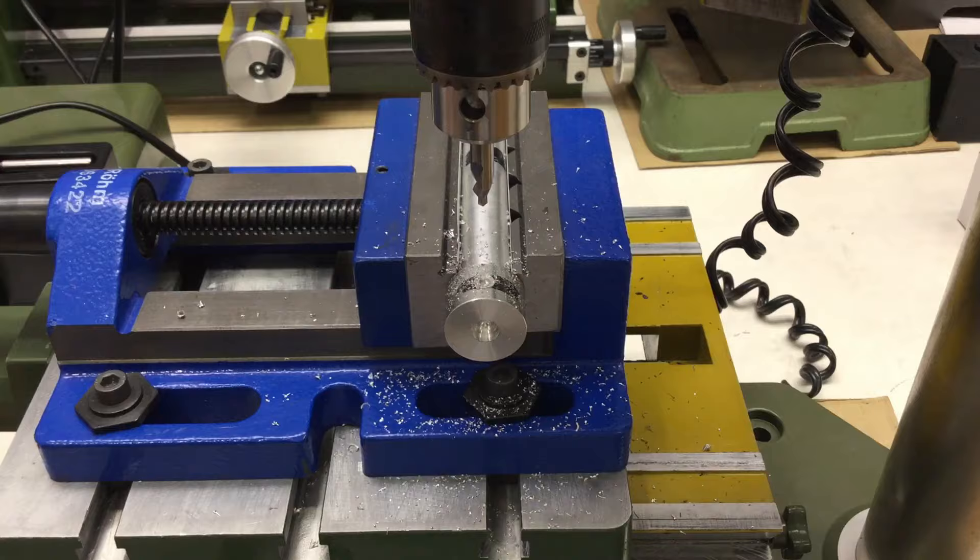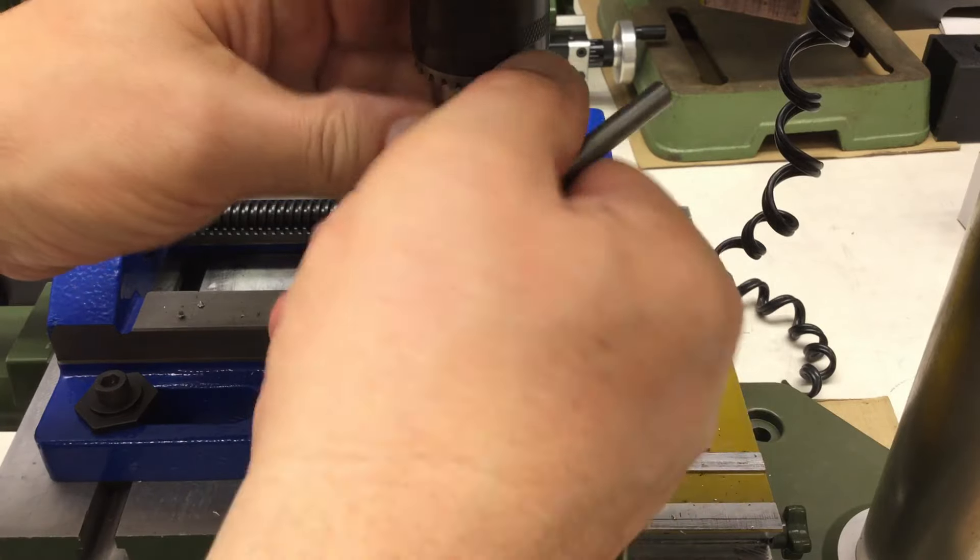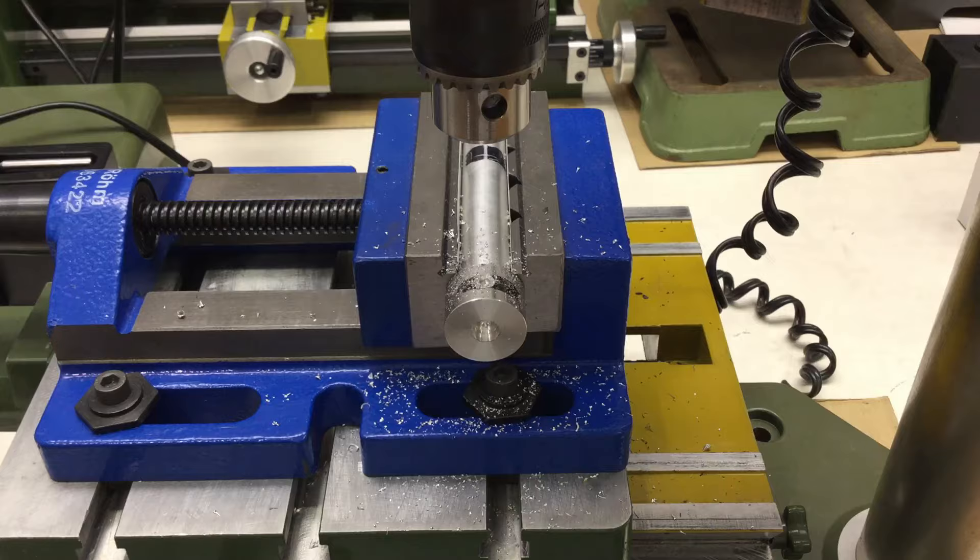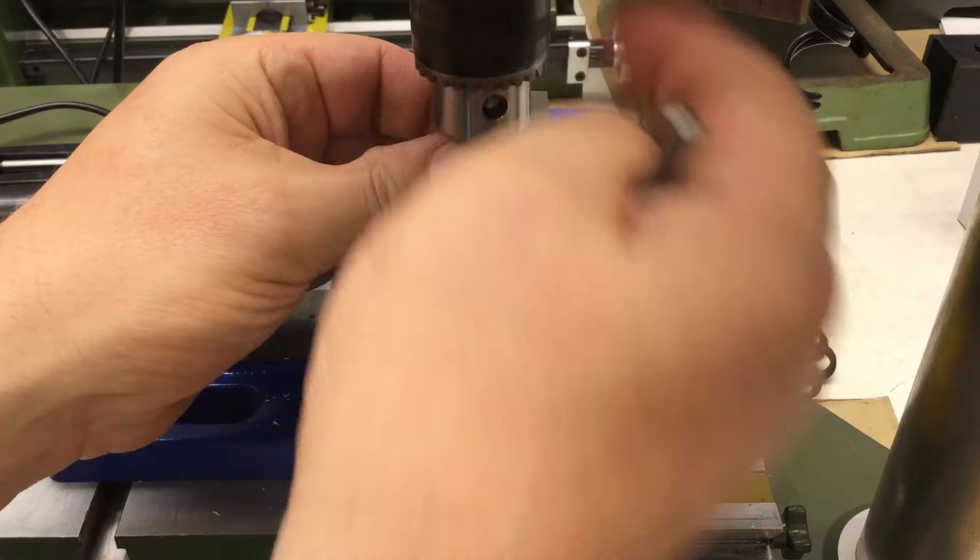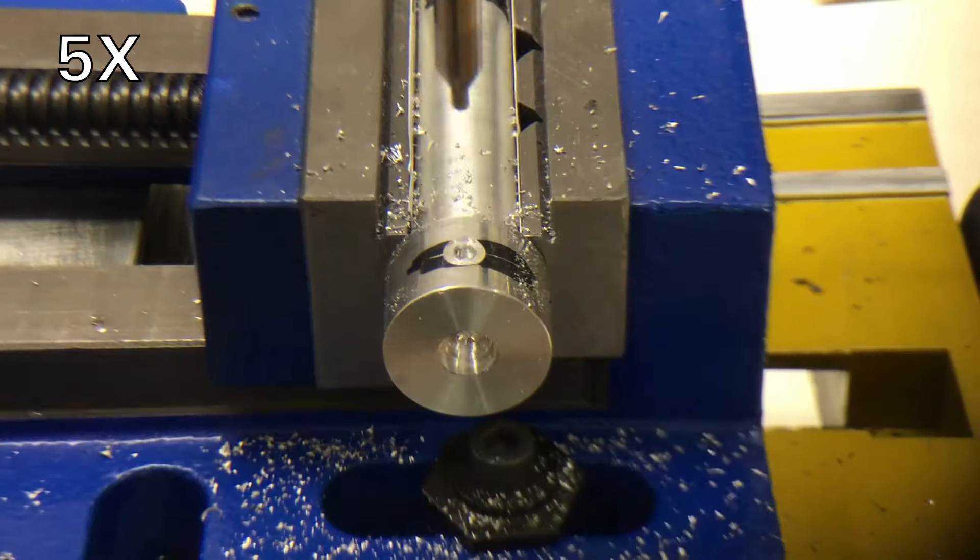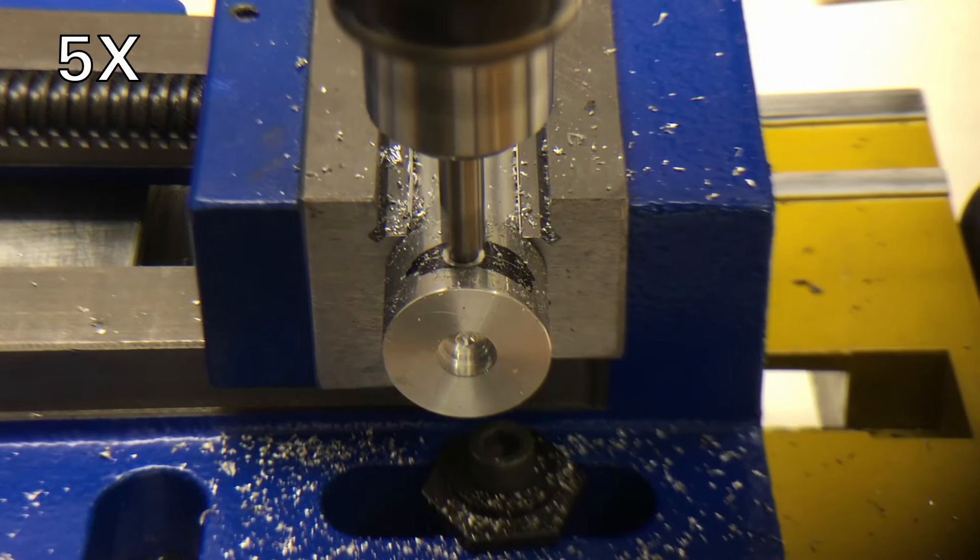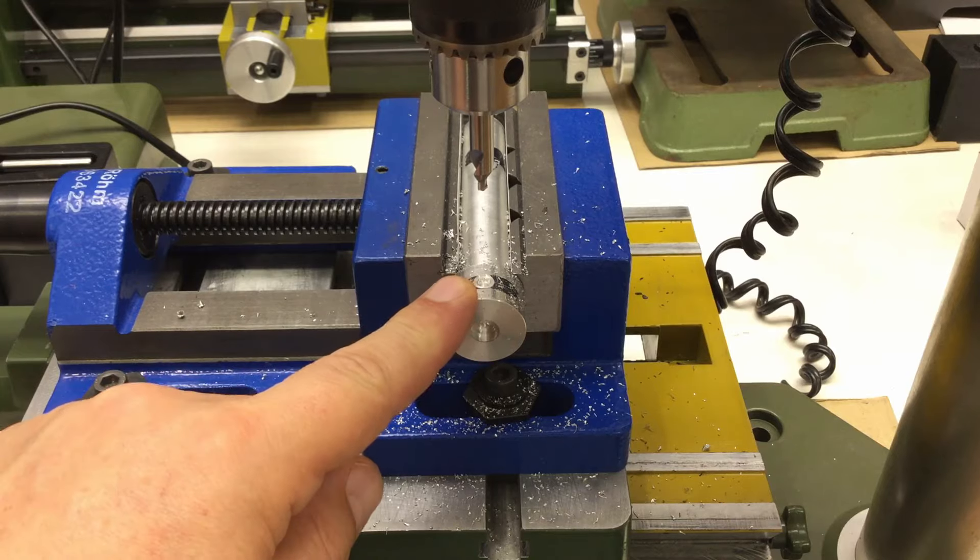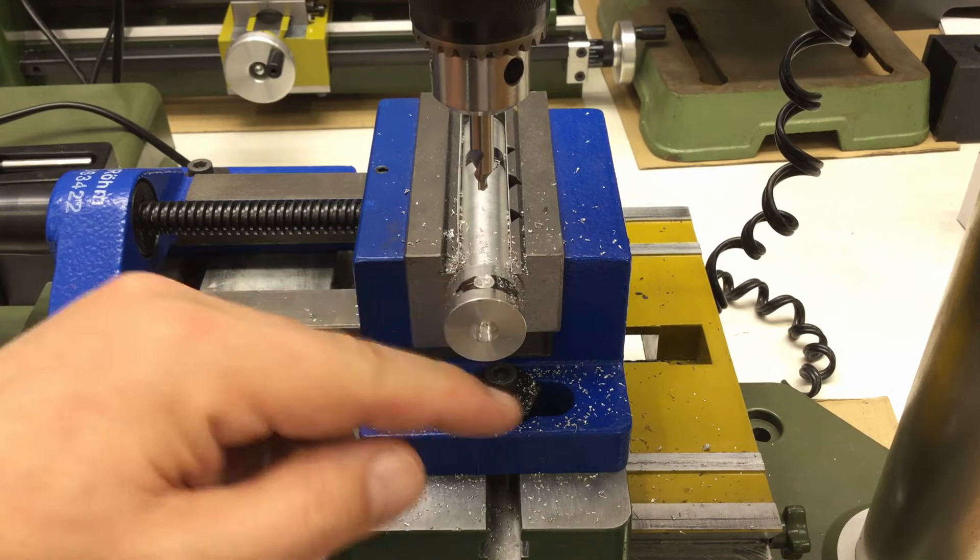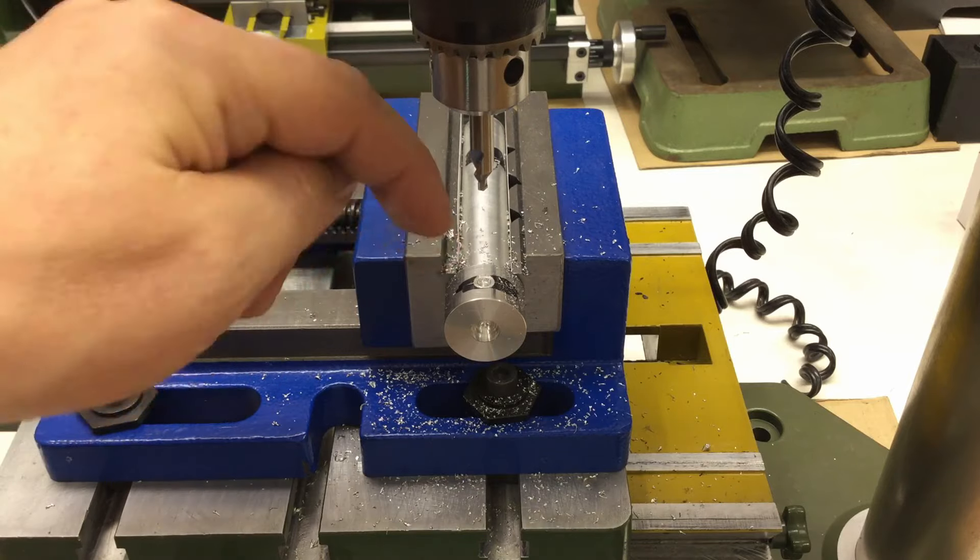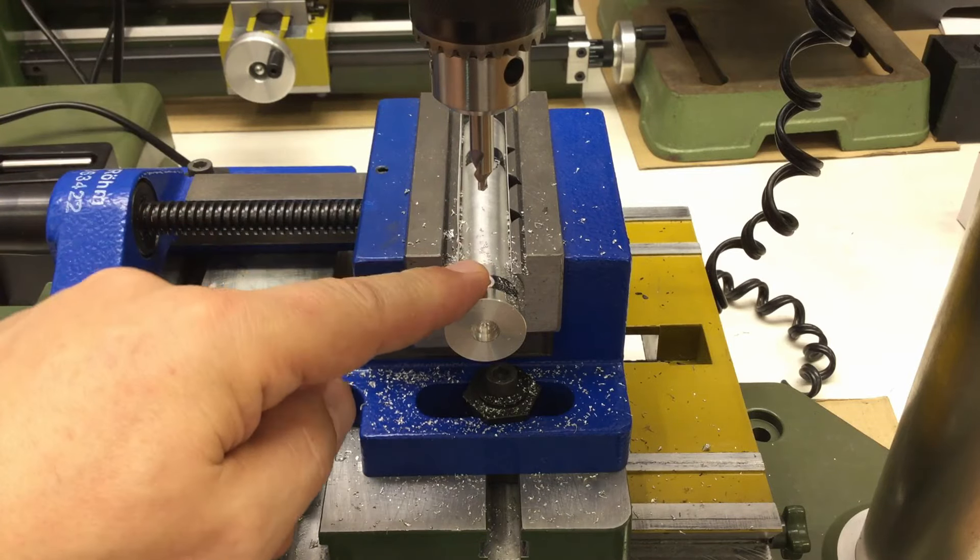So the next step would be to use a center drill. Something is very wrong with that center drill, it seems I can't get it in. Looks good, let's try the other side. There wasn't anything wrong with the center drill, I was already at the end of my 70 millimeter pull.